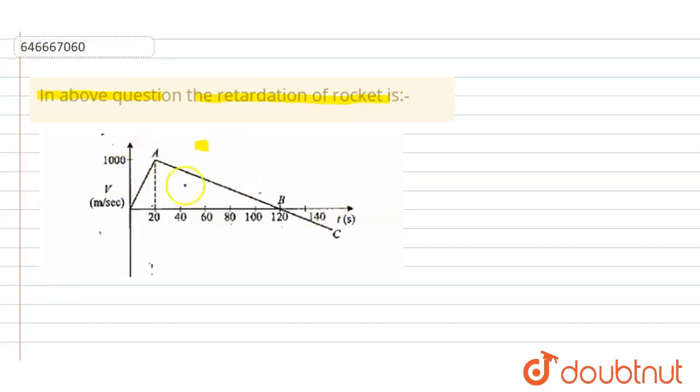Now since slope of velocity time graph gives acceleration or retardation, that is negative acceleration, so we have to find the slope of this v-t graph.